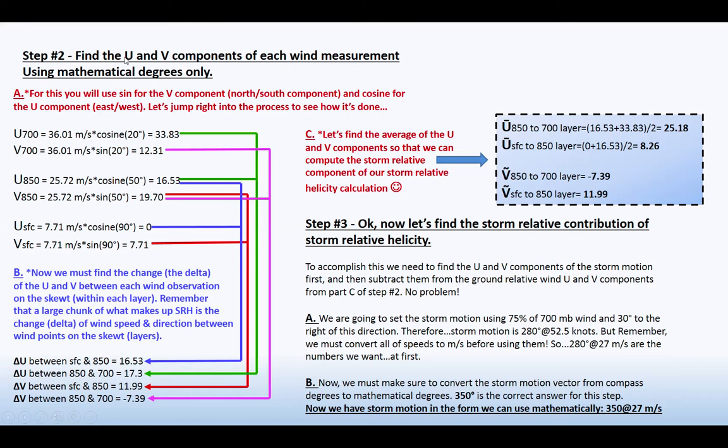Step number two is finding the U and V components of each wind measurement using mathematical degrees only. Before you start thinking you can't follow, just hold on. This is not really that bad guys. We will make easy sense of it. For this, you will use sine for the V component, which is north-south, and cosine for the U component, which is east-west. So let's jump right on into the process and do an example.